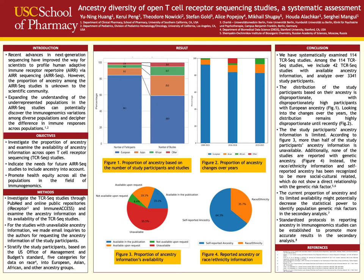Additionally, according to Figure 3, we can note that a majority of T-cell receptor sequencing studies do not have available ancestry information. Only 19.1% of T-cell receptor sequencing studies included ancestry information in the original study design. After email inquiries requesting ancestry information from the authors, only 38.2% of T-cell receptor sequencing studies have available ancestry information.